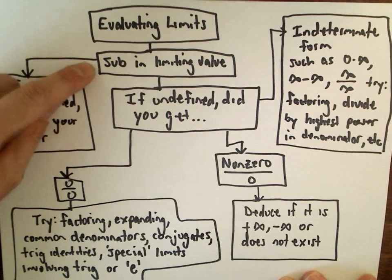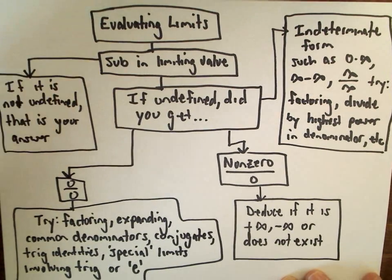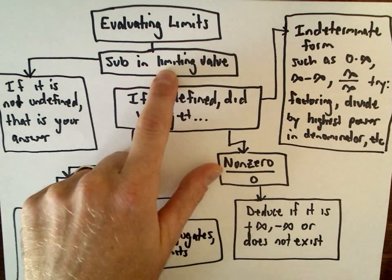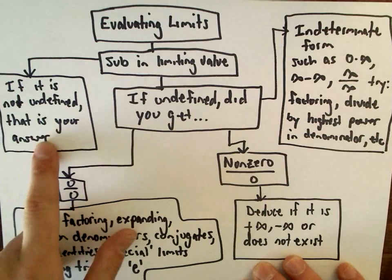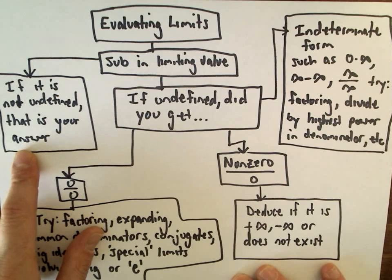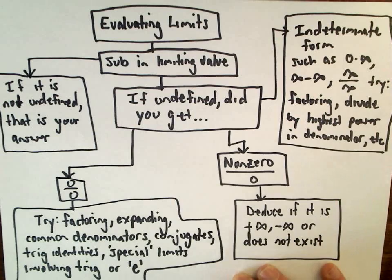The first thing I do is always substitute in the limiting value. So whatever x is approaching or h is approaching, I substitute that into the function. Basically, if it's not undefined, that's almost always going to be your answer. That's pretty much you're done. So I'm going to have one example where I plug it in and it works. Boom, we're done. Typically, that's not what happens.